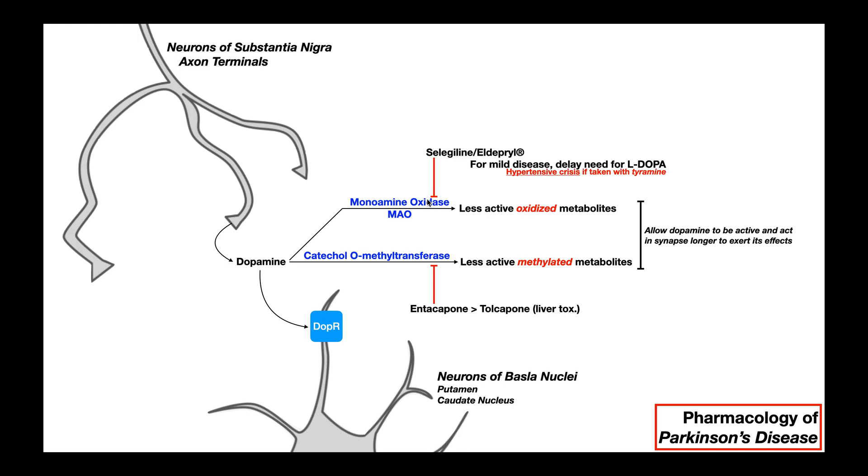We also have monoamine oxidase inhibitors. The major one here is selegiline. Selegiline is an inhibitor specifically of monoamine oxidase B. So it inhibits this enzyme and prevents the inactivation of dopamine. So you have more dopamine available for a longer period of time in the synapse, where it can then exert its effects. Some sources will say that these monoamine oxidase inhibitors can be used as a first line of defense to delay the need for L-DOPA. However, monoamine oxidase inhibitors are not actually used as much anymore. They've been replaced by other drugs.